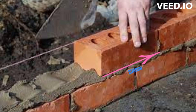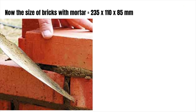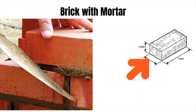The sizes become: length of 235 millimeters, width of 110 millimeters, and a depth of 85 millimeters after the 10 millimeter mortar. The brick size becomes 235 by 110 by 85 millimeters. Note that the width of the brick remains the same even after placing the mortar.